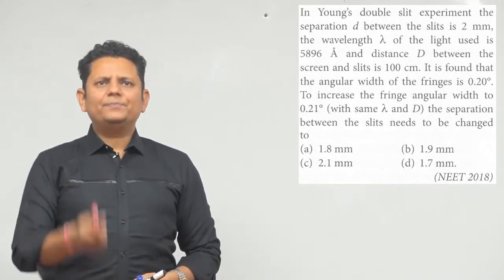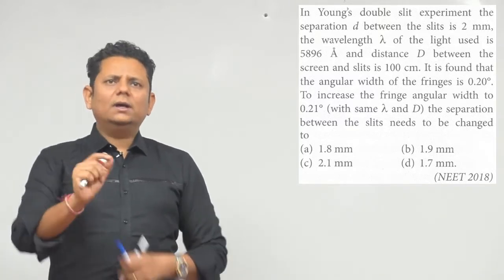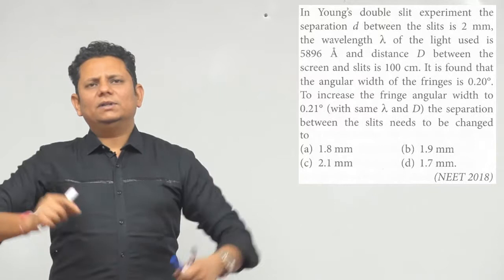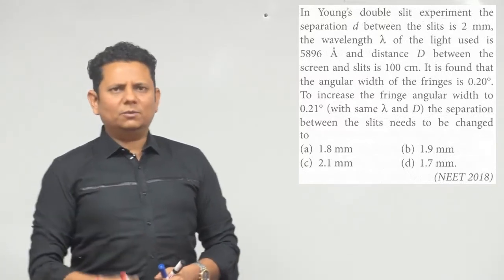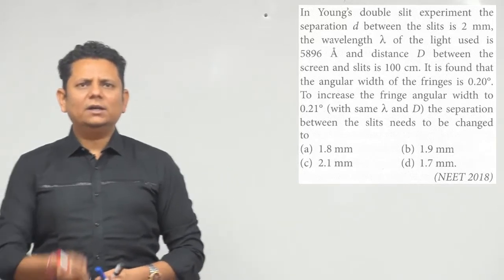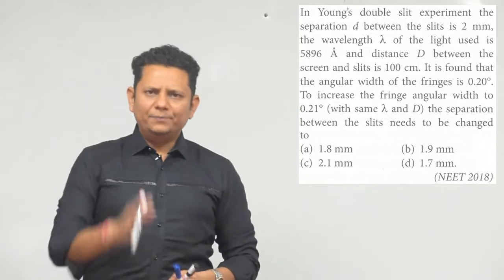is 0.2 degree. So to increase the fringe angular width to 0.21, with the same lambda and D, the separation between the slits needs to be changed. Our options are 1.8, 1.9, 1.7, or 2.1 millimeter.